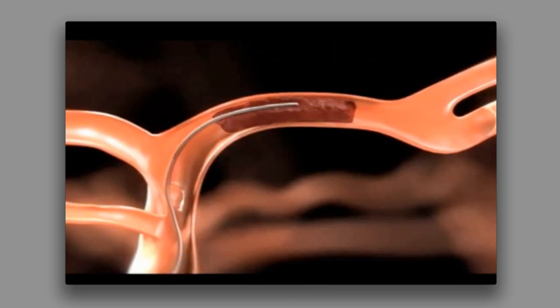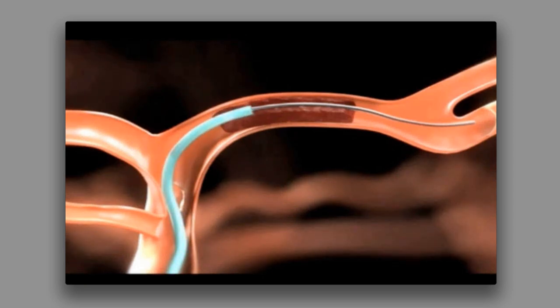In the first step of the procedure, a thin wire called a microwire is advanced up the arterial tree across the clot. This wire is used to advance a microcatheter, which is a long, thin plastic tube, also across the clot.